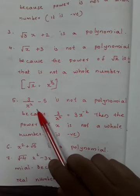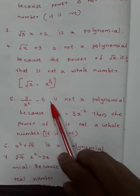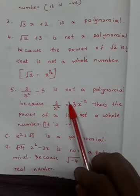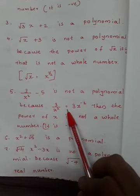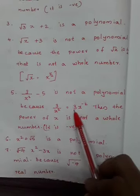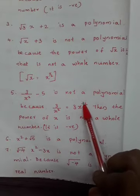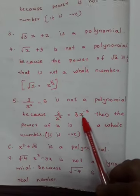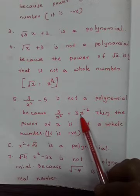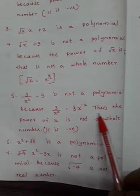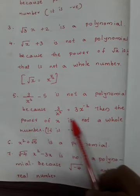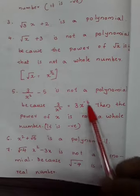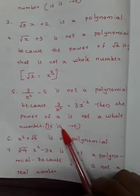Next, 3/x² - 5: it is also not a polynomial. Why? We can write 3/x² as 3x⁻², and the power of x is -2, which is not a whole number — it is negative. This was studied in the chapter on Exponents and Powers. So it is not a polynomial.